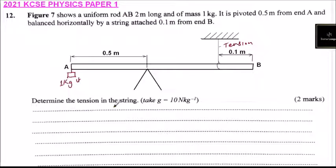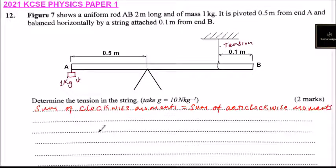Determine the tension in the string. Take g equals 10 N per kg. So what we do here is we say sum of clockwise moment is equals to sum of anticlockwise moment.